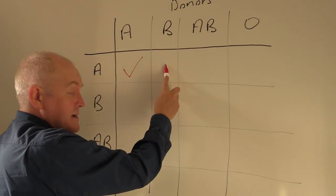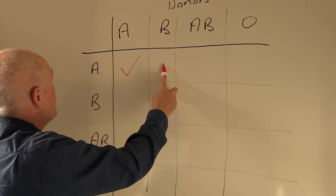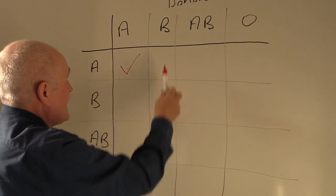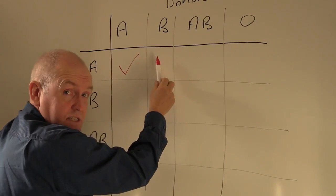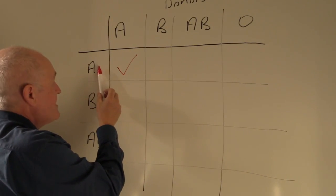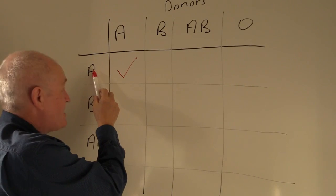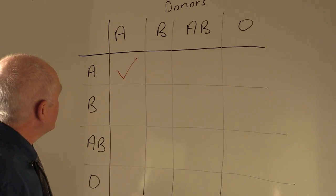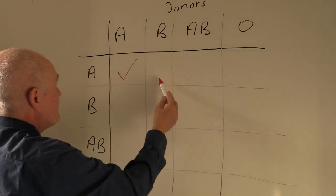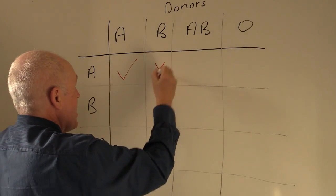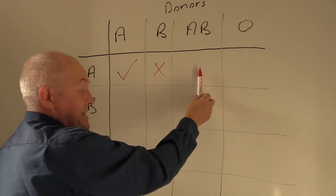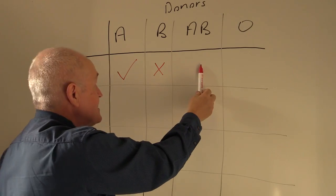Now if someone's blood group B tries to give to someone who is blood group A, then in that case the B antigens in the donated red cells will be agglutinated by the anti-B antibodies present in the group A blood plasma. So can B give to A? No, they can't.